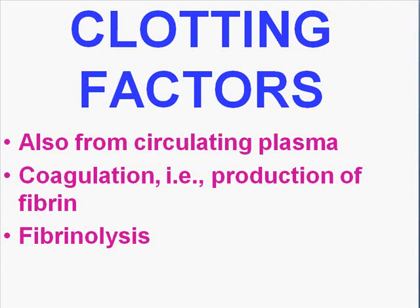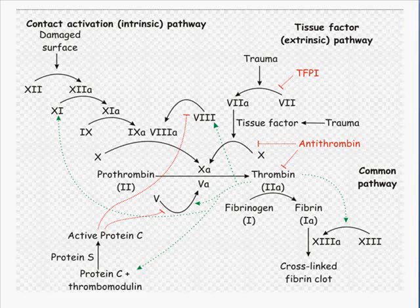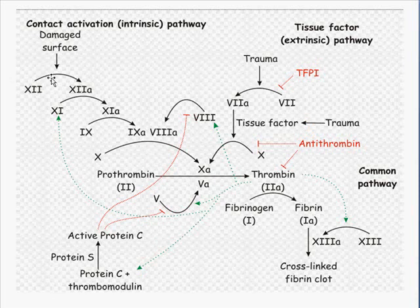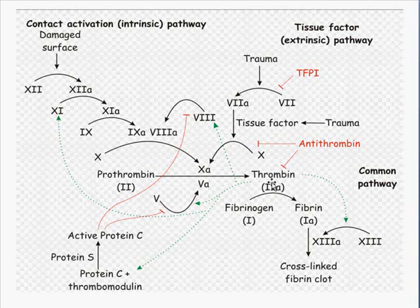Here is the coagulation cascade slide. We're talking about the intrinsic pathway and the extrinsic pathway — the extrinsic pathway being triggered by tissue factor or trauma, whereas the intrinsic pathway starts with a damaged surface activating factor 12 into factor 12a. These cascades from both sides ultimately result in the formation of a thrombin clot, which can then be lysed by fibrinolysis — and all of this fits into the inflammatory process as well.